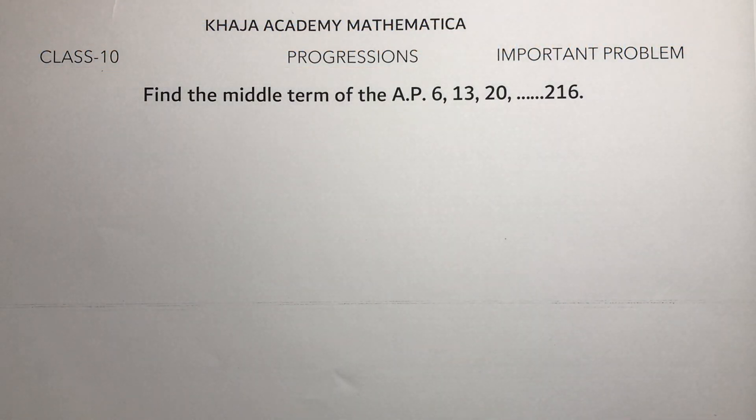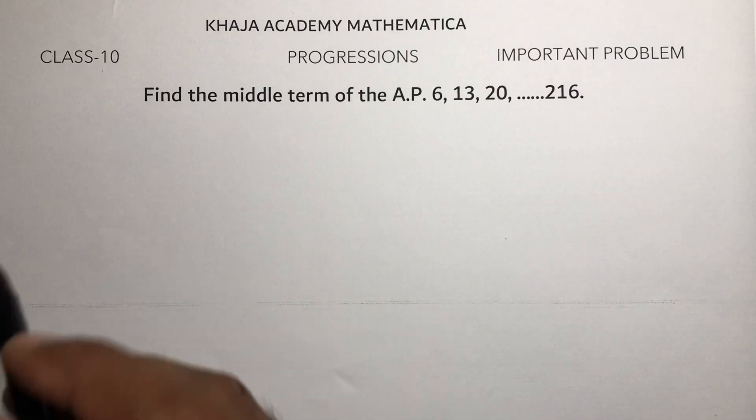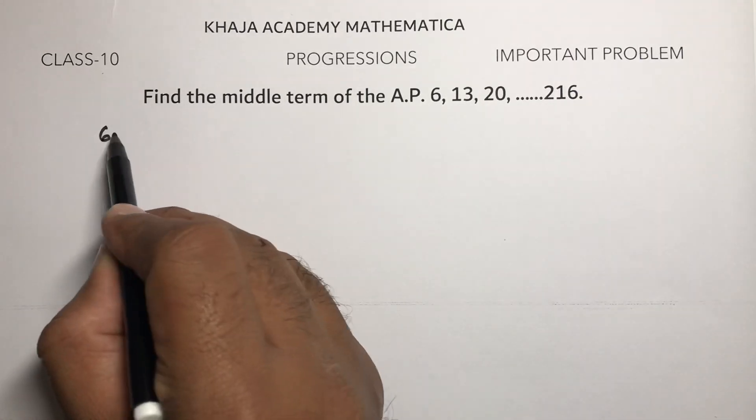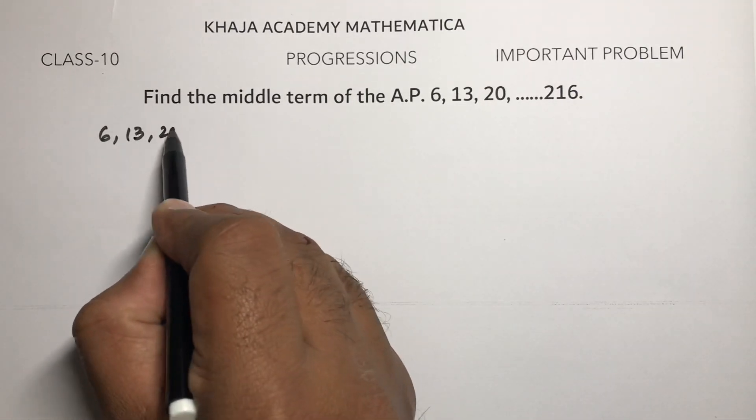Class 10, one more important problem from progressions. Find the middle term of the AP: 6, 13, 20, ..., 216. So here the series is 6, 13, 20, and so on.